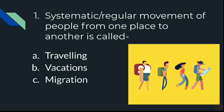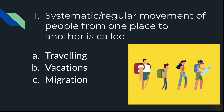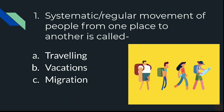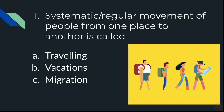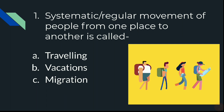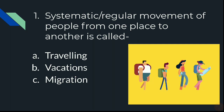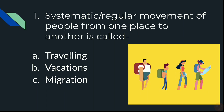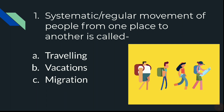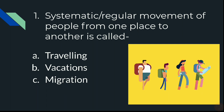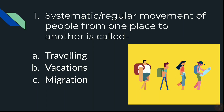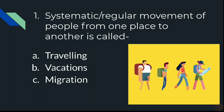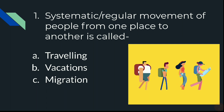Let's start with the quiz. Question 1: Systematic or regular movement of people from one place to another is called what? A) Traveling, B) Vacation, or C) Migration. Think about it. You can note down your answer in a page or notebook so that you can check it at the end.